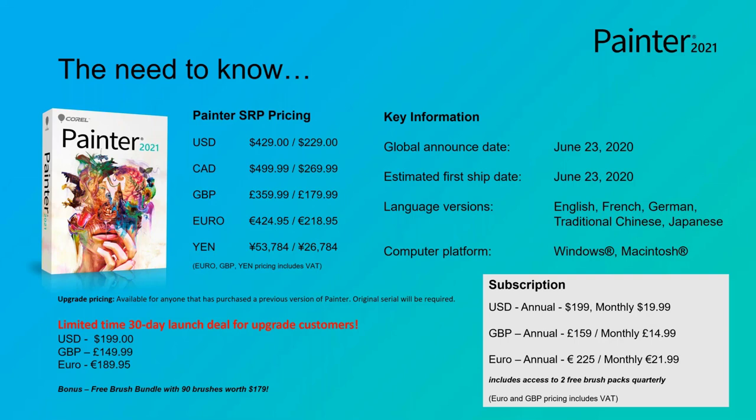We've also now added subscriptions so that you have a choice. For subscriptions, we have two different plans: one is monthly at $19.99 or annual at $1.99. Some of the benefits of subscription are that we're going to give you access to two free brush packs quarterly. You also get both Windows and Mac with a subscription plan, and as we come out with updates, you will automatically get those updates. I have all the pricing for different regions up here, and you can find all of this information on the website.